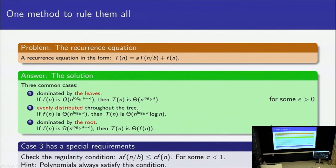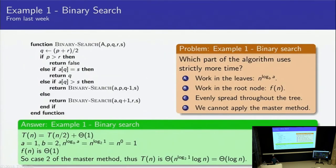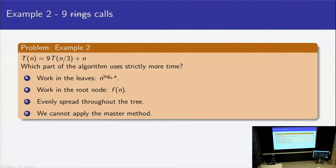Okay, well let's do one more. Yeah, my answer is also on my slides, you can check it again at home if you want. Let's go for this one. This time I have nine calls, and these nine calls all use only a third of the input. My question again is, which of these things require the most time? Is it the leaves, the root, or is the work evenly spread?